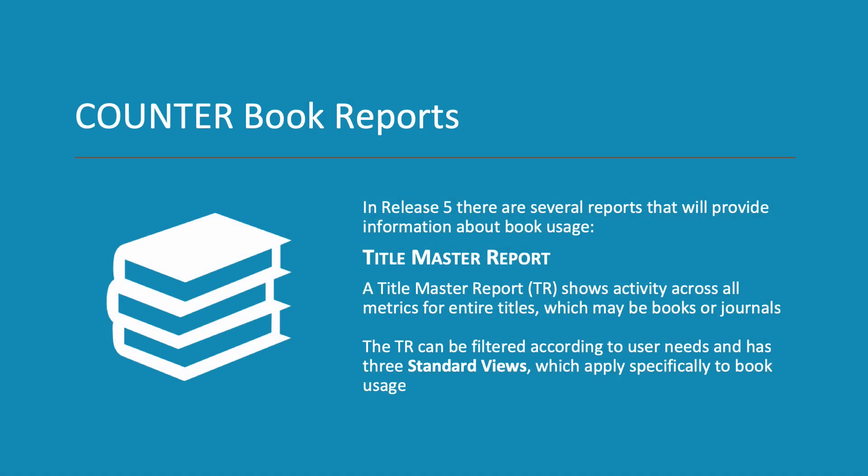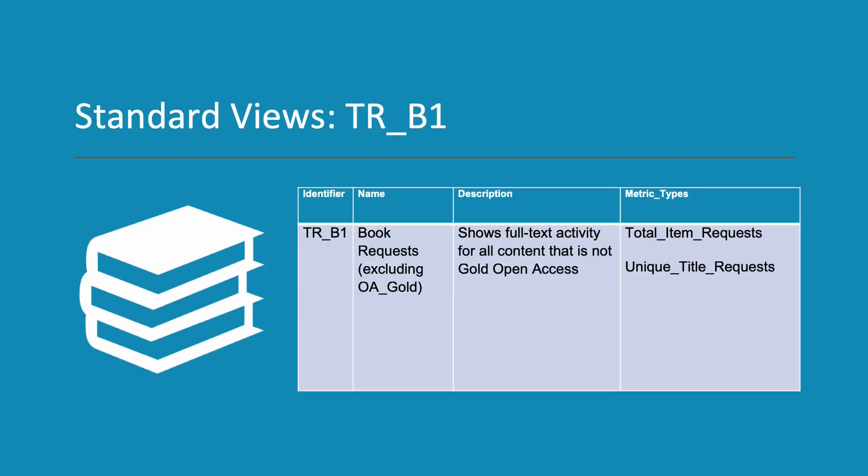In Release 5, there are several reports that provide information about book usage. We will now take a look at the Counter Reports which provide information about book usage. A Title Master Report shows activity across all metrics for entire titles, which may be books or journals. The TR can be filtered according to user needs and has three standard views which apply specifically to book usage.